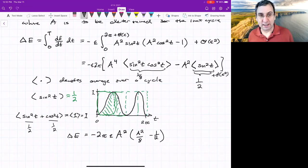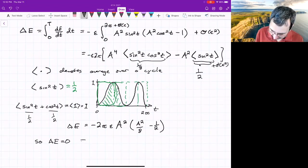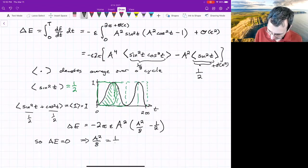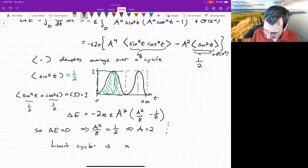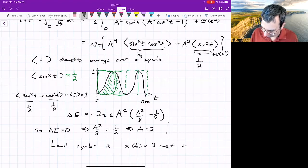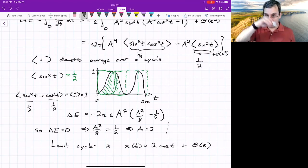And that's for any cycle. For the limit cycle, we want delta E equal to zero. The change in energy equal to zero. This implies that A squared over eight equals one half, which implies A equals two. It magically emerges. The limit cycle x as a function of time is two cosine t plus some corrections that are order epsilon. Everything epsilon small. So this bears out what we saw numerically. Things seem to be going to a limit cycle. That's the first method.